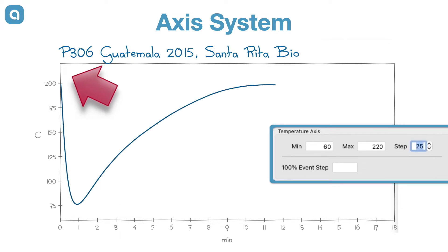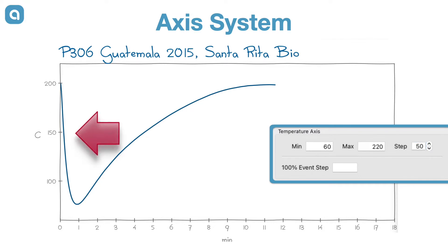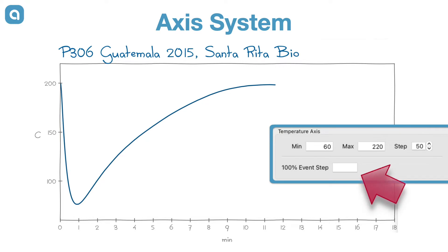We also increase the step size of the tick step to 50 to reduce the number of axis labels. That mystic 100% event step field will be covered in a minute.